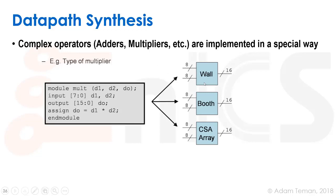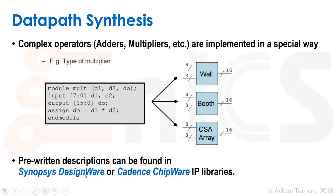For example, a multiplier could be made with a Wallace tree multiplier, it could do Booth recoding, it could use a carry-save adder array. There are lots of ways to do this. In most tools nowadays, you get these IPs — pre-written structural descriptions of how to make these different architectures — and the synthesizer will either choose one for you according to the constraints you enter, or you can explicitly tell it to use one type or another. In Synopsys these are called DesignWare; Cadence calls theirs ChipWare. These are soft IPs that you should be aware of and use.